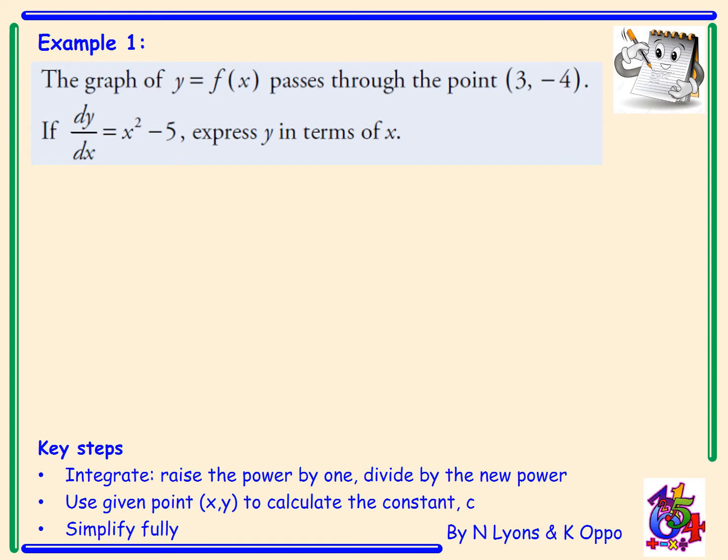Let's look at an example. The graph of y equals f(x) passes through the point (3, -4). If dy/dx equals x squared minus 5, express y in terms of x.